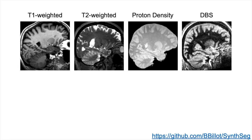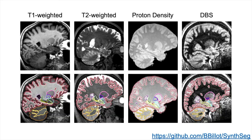We evaluate our approach on four types of contrasts. The results show that SYNSEG successfully segments every modality, despite it has never seen a real image during training. Moreover, we demonstrate that synthesizing a broad range of random contrasts, even if unrealistic, increases the generalization of the network.